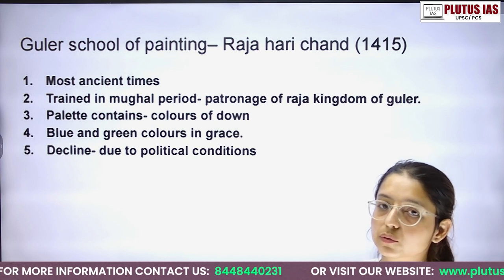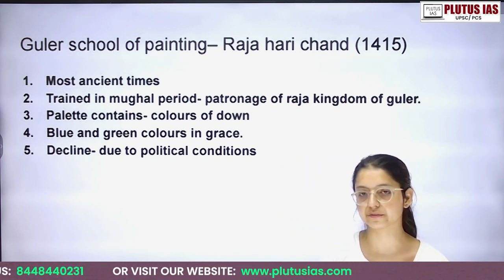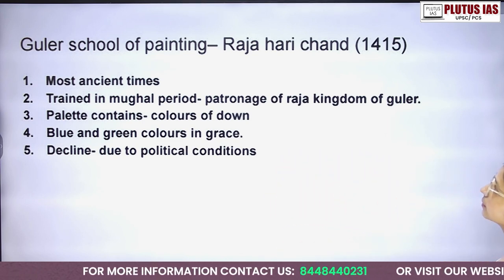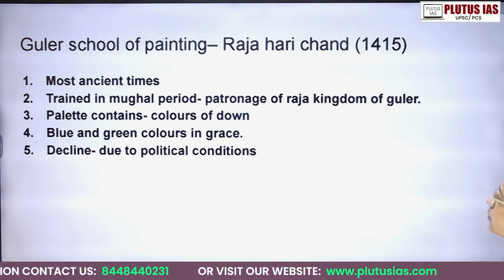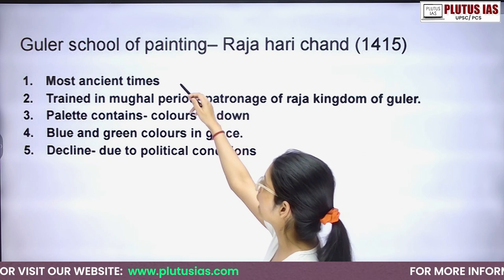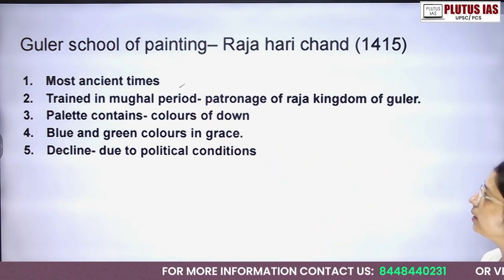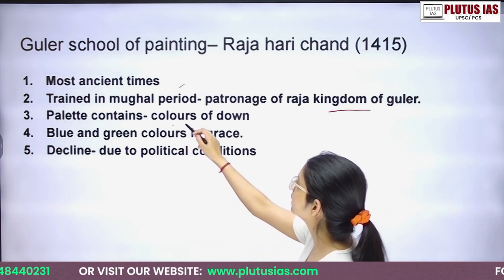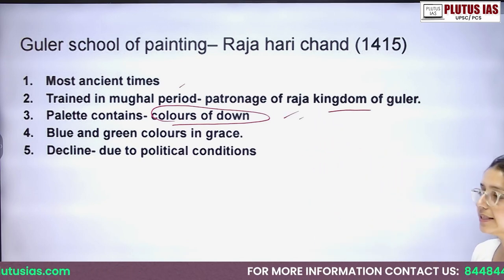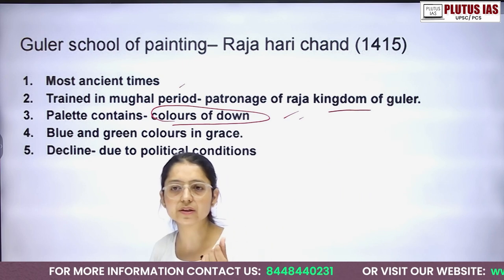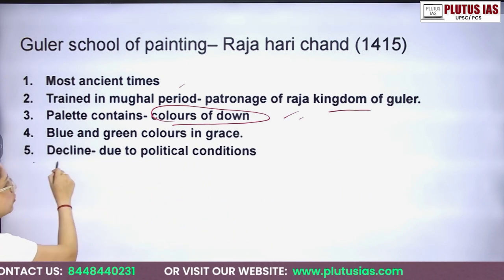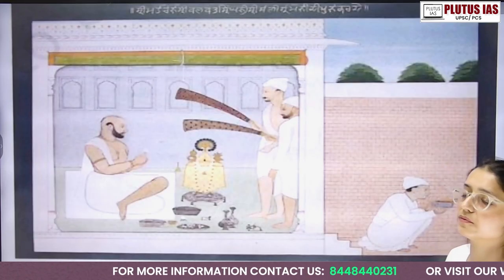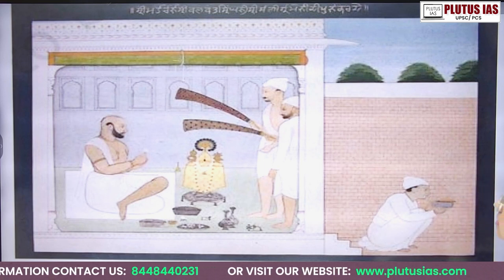This question has been asked in the Himachal Pradesh Administrative Services exam. The same Himachal portion is 30% in PGT lecturer exams as well. The Guler School of Painting was founded at the time of Raja Hari Chand. Artists trained in the Mughal period worked in the kingdom of Guler. The color palettes contained colors like a rainbow, with blue and green prominently used. The school eventually declined due to political conditions and interference from other states.